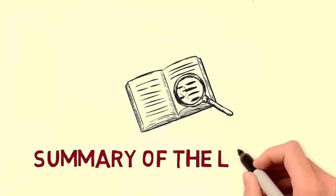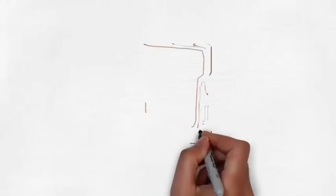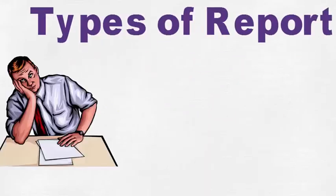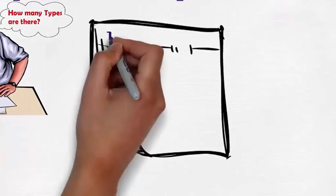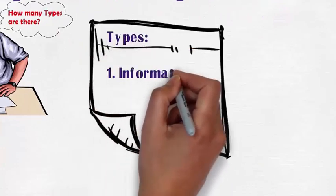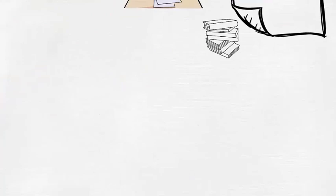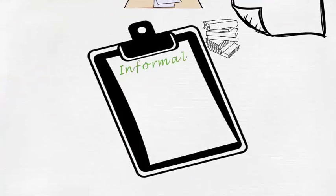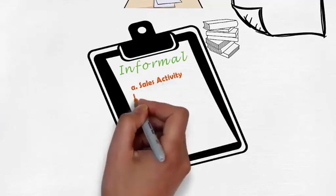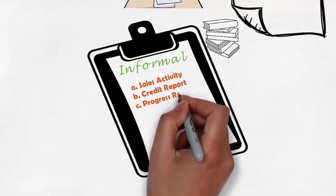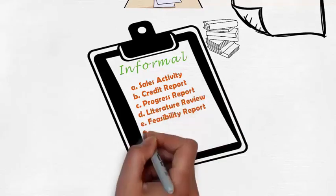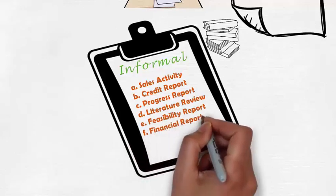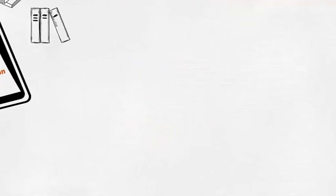To briefly summarize today's lecture: we discussed the different types of report in detail. The two major categories are formal and informal. Informal reports are usually short in length and deal with everyday problems and issues; their types include sales activity, credit report, progress report, literature review, feasibility report, financial report, and personal evaluation. Formal reports are detailed and complex.